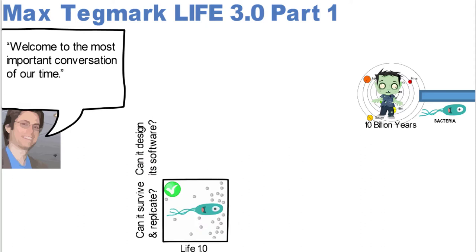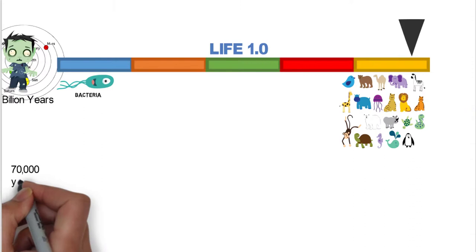And it's a scale, there's different levels of it, and different levels of complexity of that life. But can it design its own software? He basically says no. That's one of the negatives on Life 1.0.